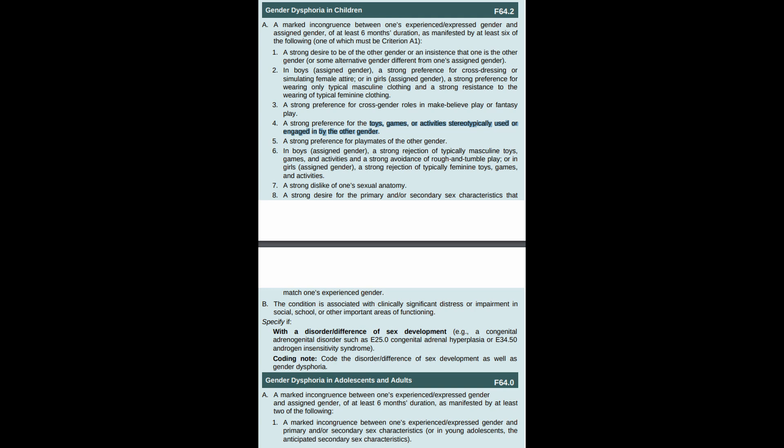Let's go over the diagnostic criteria for gender dysphoria in children. Criterion A: a marked incongruence between one's experience or expressed gender and assigned gender, of at least six months' duration, as manifested by at least six of the following, one of which must be criterion A1. 1: A strong desire to be of the other gender, or an insistence that one is the other gender, or some alternative gender different from one's assigned gender. 2: In boys assigned gender, a strong preference for cross-dressing or simulating female attire; or in girls assigned gender, a strong preference for wearing only typical masculine clothing and a strong resistance to typical feminine clothing.